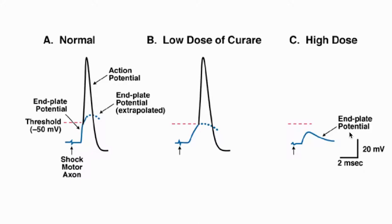The end plate potential has a very specific meaning: it is not merely a potential recorded at the motor end plate, but the underlying trigger event that initiates the action potential. The action potential at the end plate is not the end plate potential. The end plate potential is the depolarization that provides the stimulus — like a match used to ignite gunpowder — which normally activates the action potential.